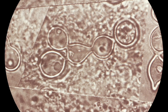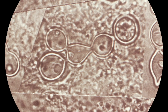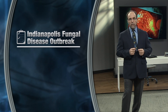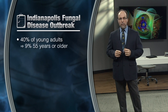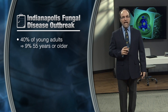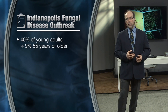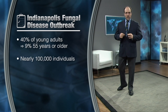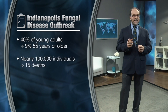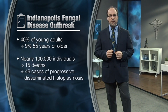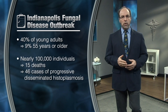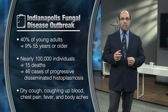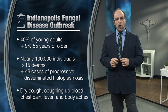Another true case example is how the pervasiveness of fungal infections can extend beyond the scope of a Boy Scout troop. A massive outbreak of fungal disease occurred in Indianapolis several decades ago. Nearly 40% of young adults and 9% of persons older than 55 who lived in certain parts of Indianapolis were presumed to be infected on the basis of serological or blood test data — representing nearly 100,000 individuals. The outbreak was also unusually severe: there were 15 deaths and 46 cases of progressive disseminated histoplasmosis. Patients presented little by little over the course of four months with symptoms of a dry cough, coughing up blood, chest pain, fever, and body aches, presenting to different physicians' offices, and it took several months before the scope of the outbreak was known.